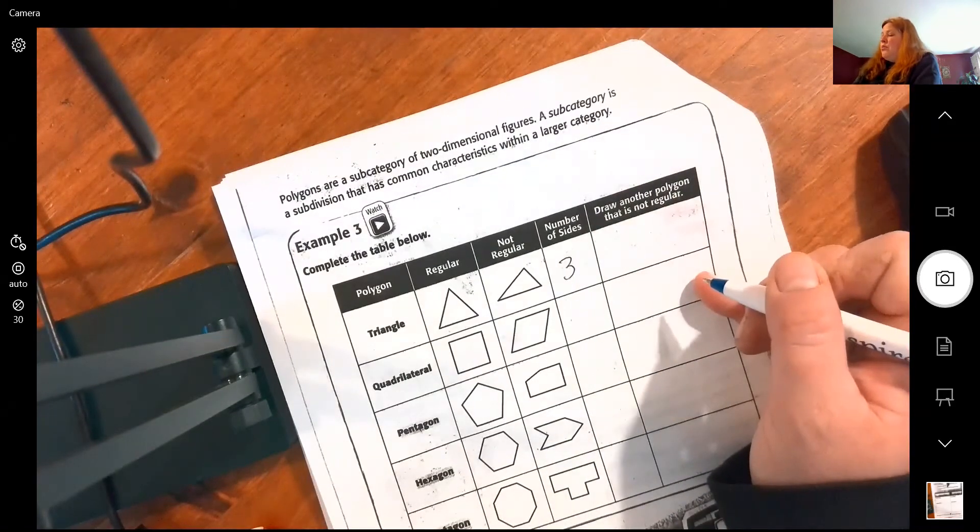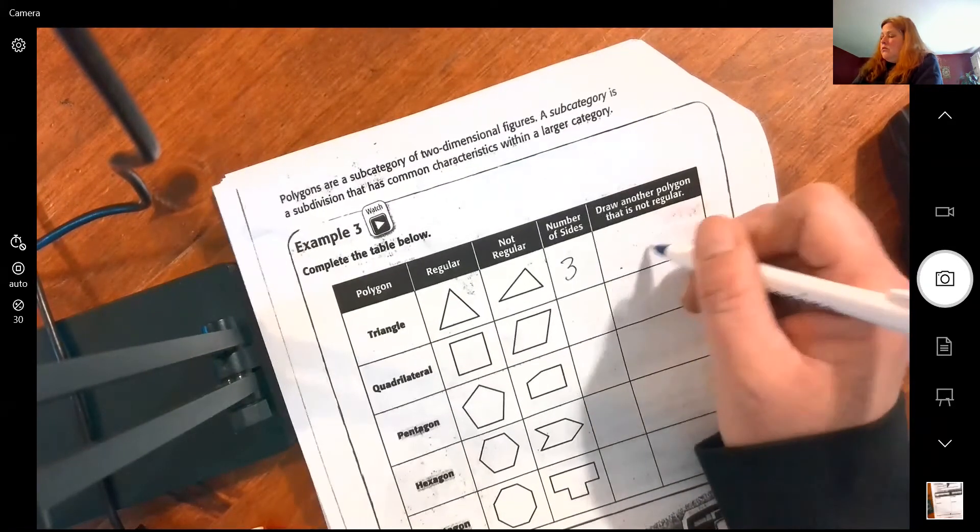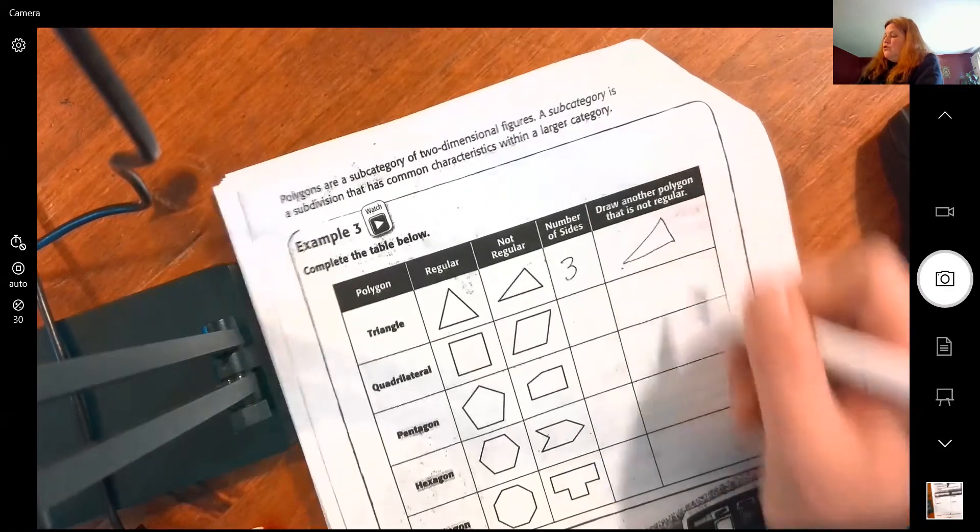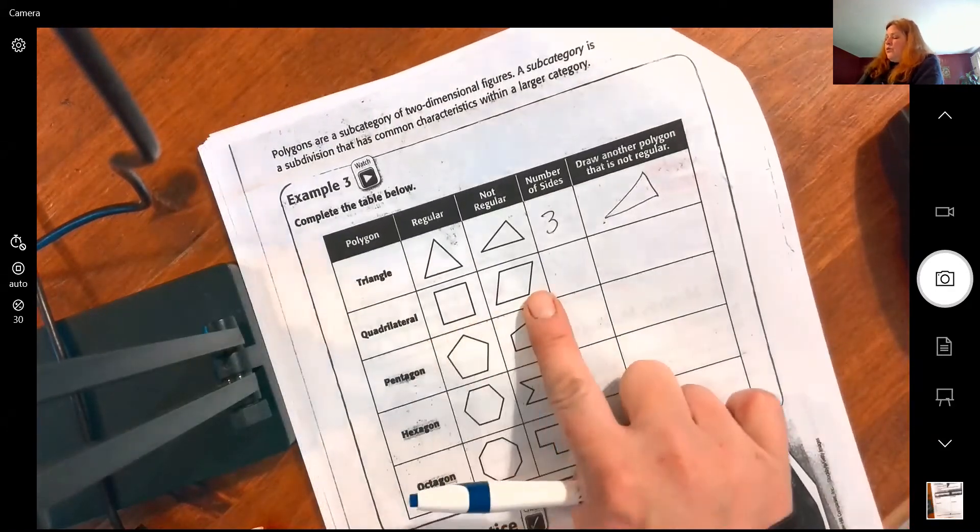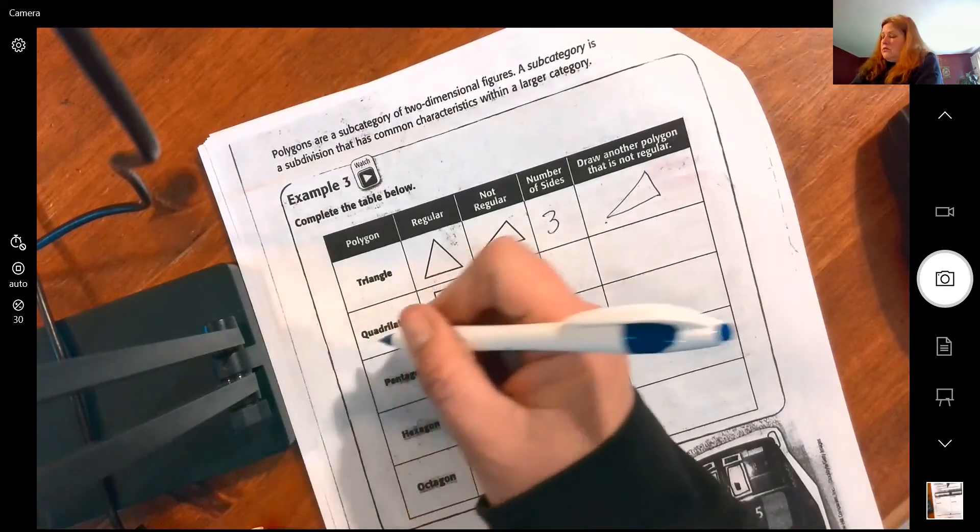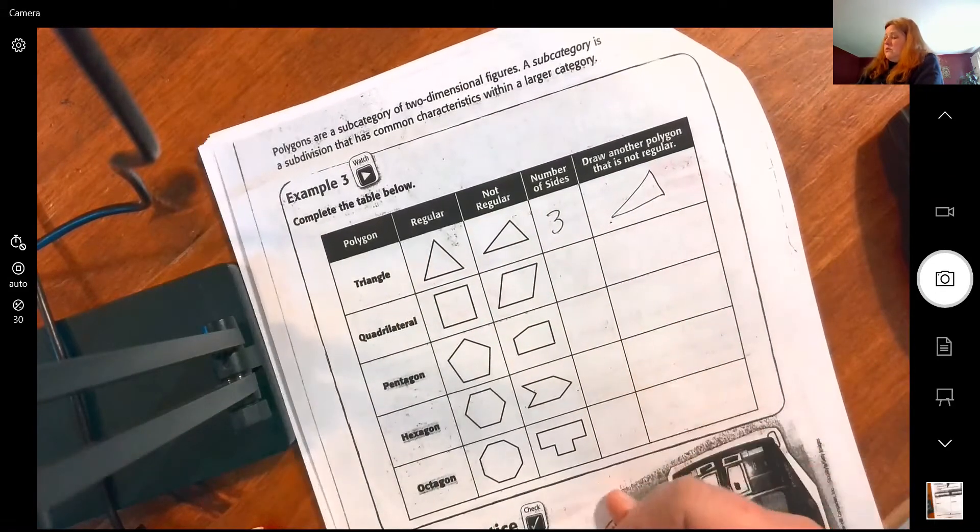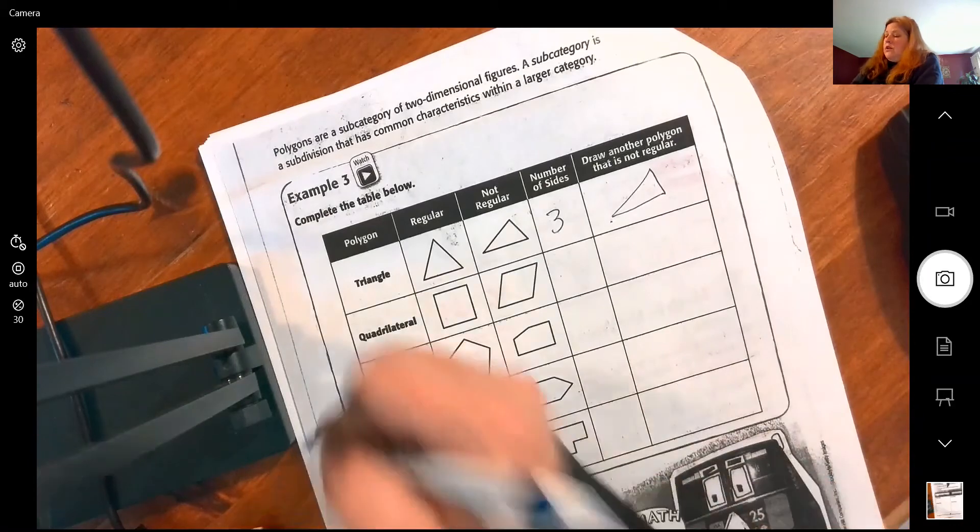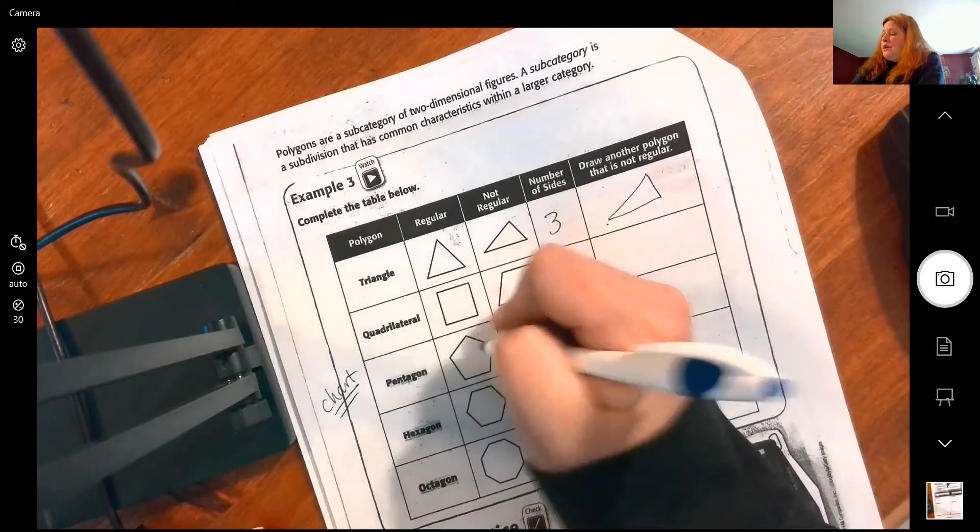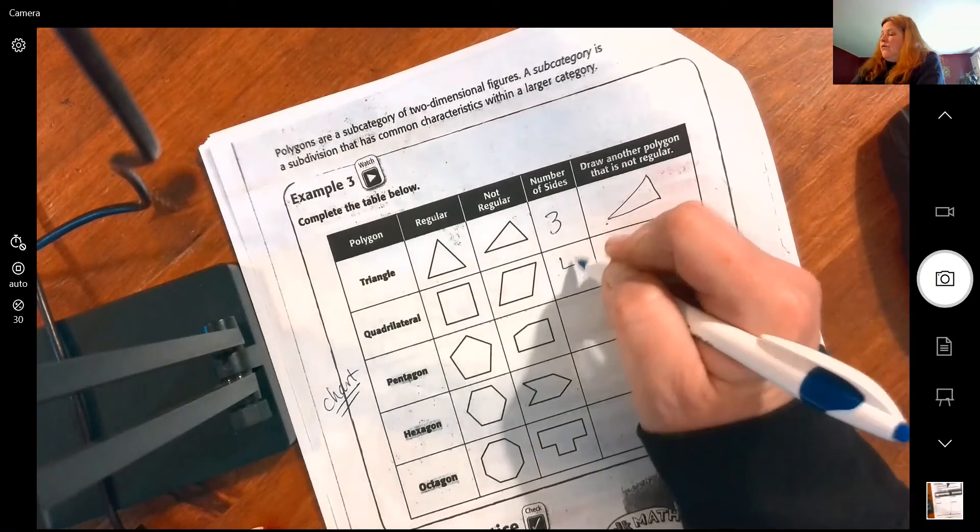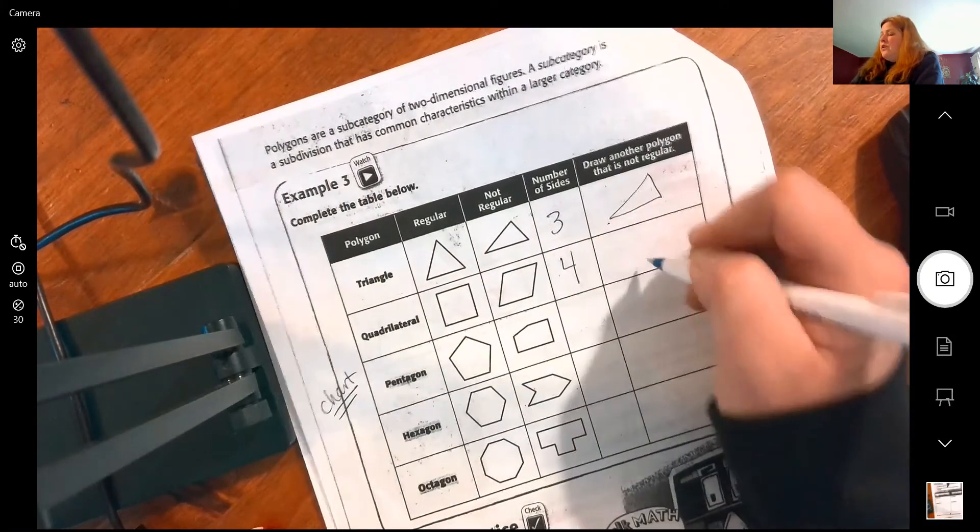Draw another polygon that is not regular, just make sure it has three sides. Quadrilaterals, and we're going to add these to your chart on our next video. Quadrilaterals have how many sides? Four. Draw another one that is not regular.